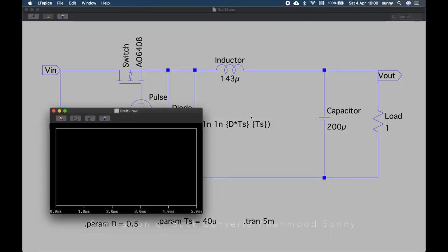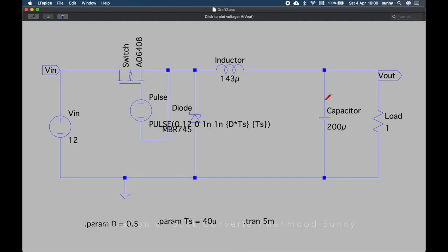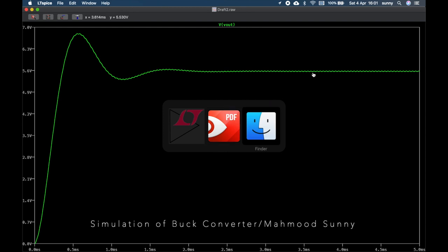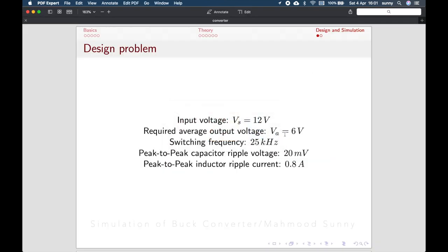Now, we can check the output voltage. Let's check the output voltage here. This seems to be a very nice shape. At steady state, it achieves 5.6 volts, which is not exactly 6 volts, as we have hoped for. But, it's pretty close.